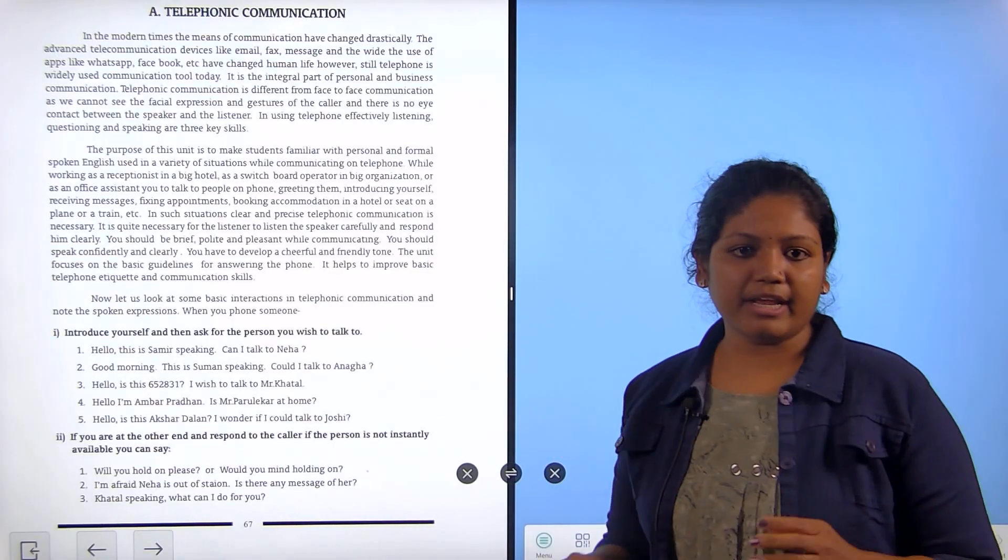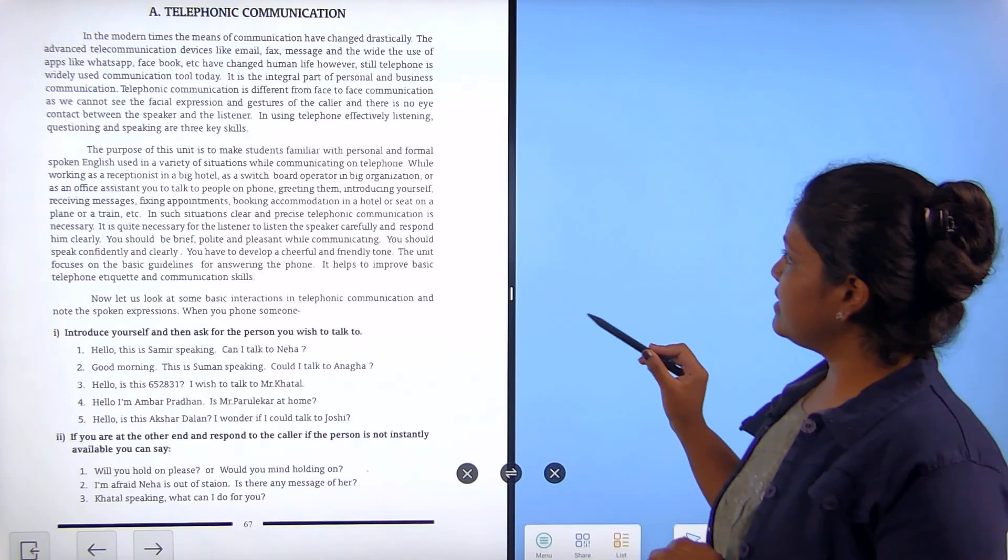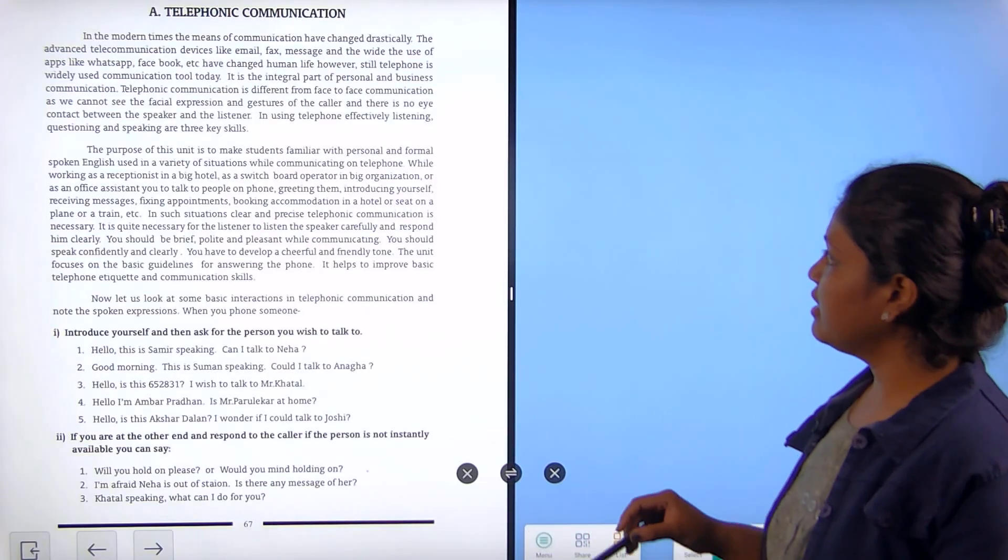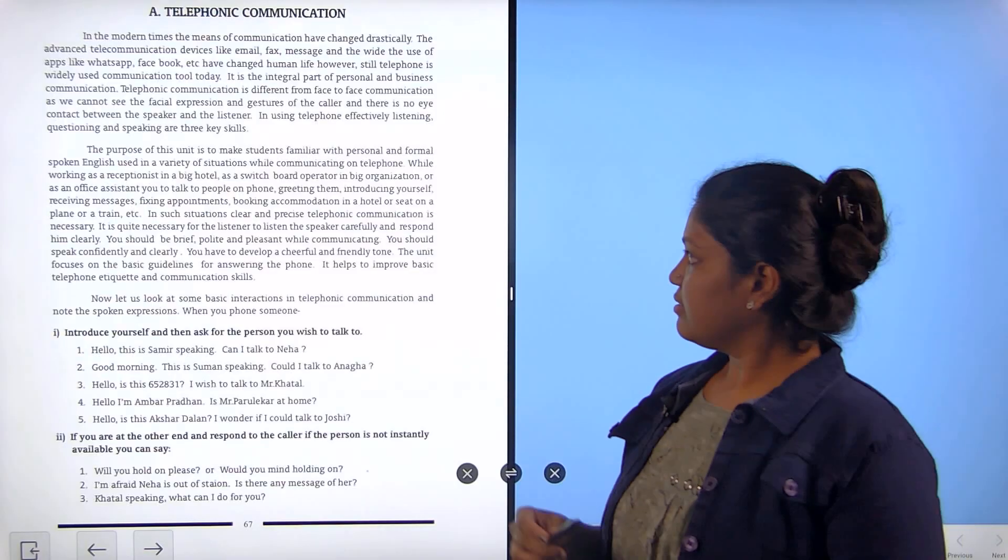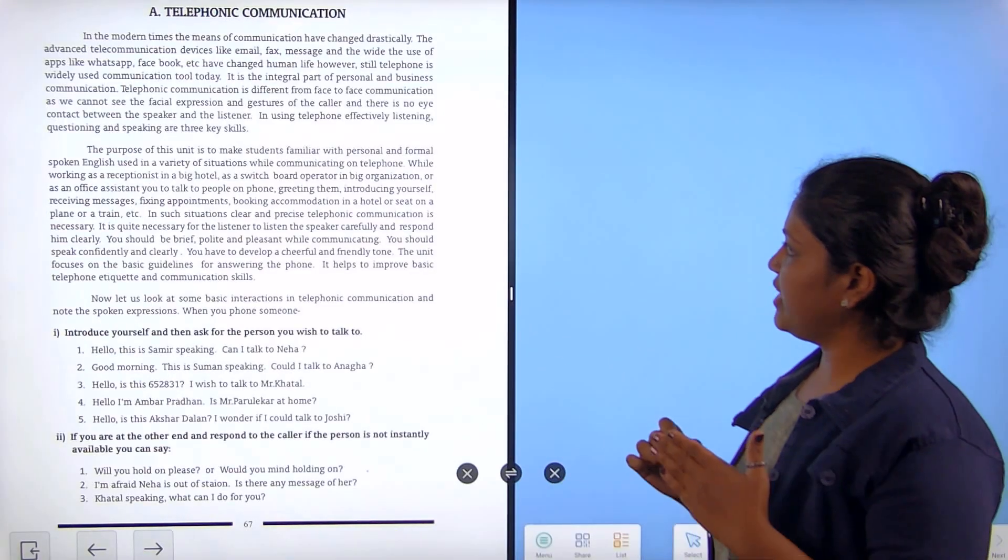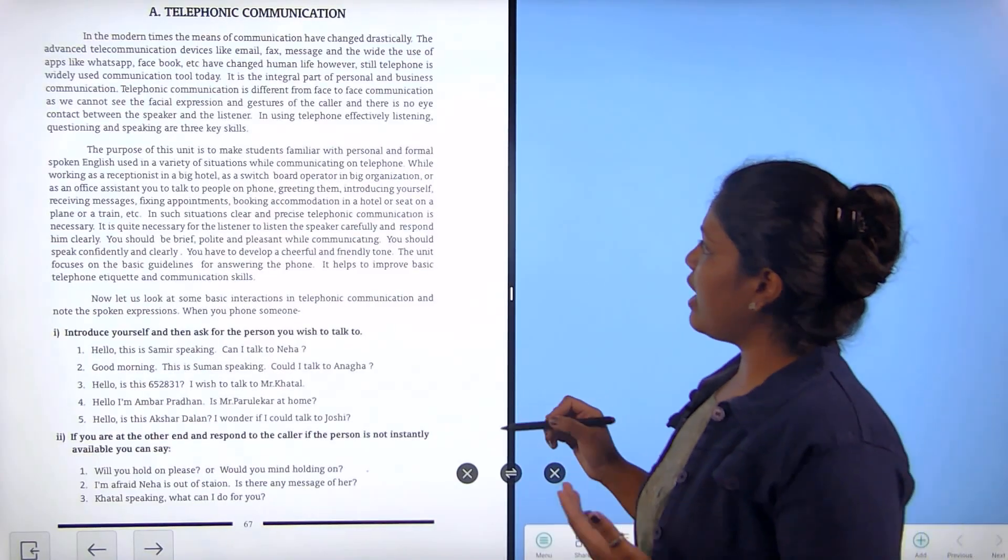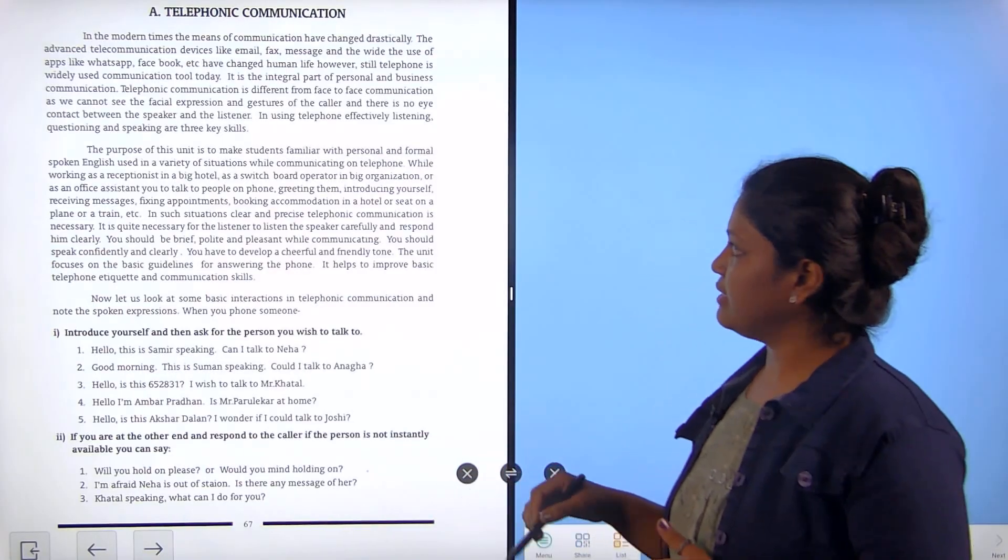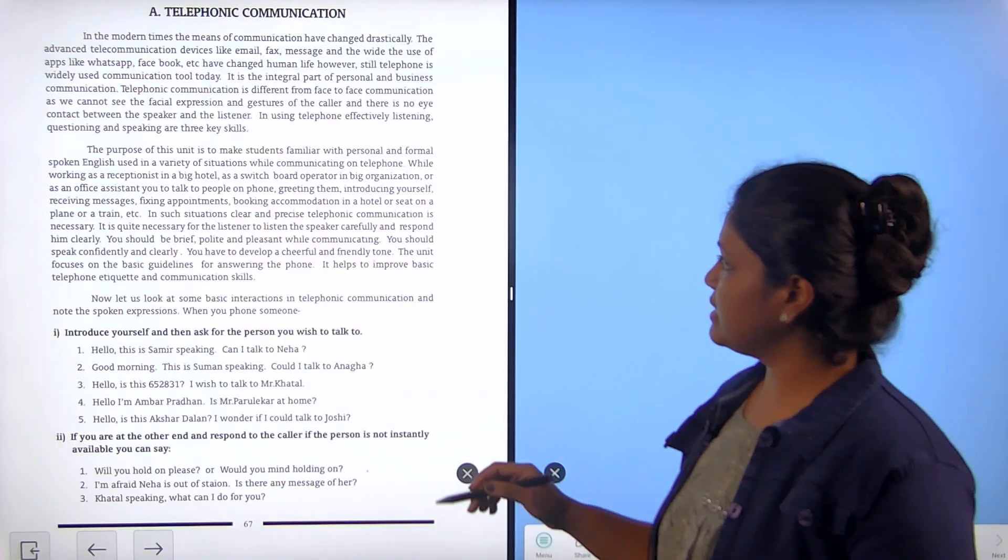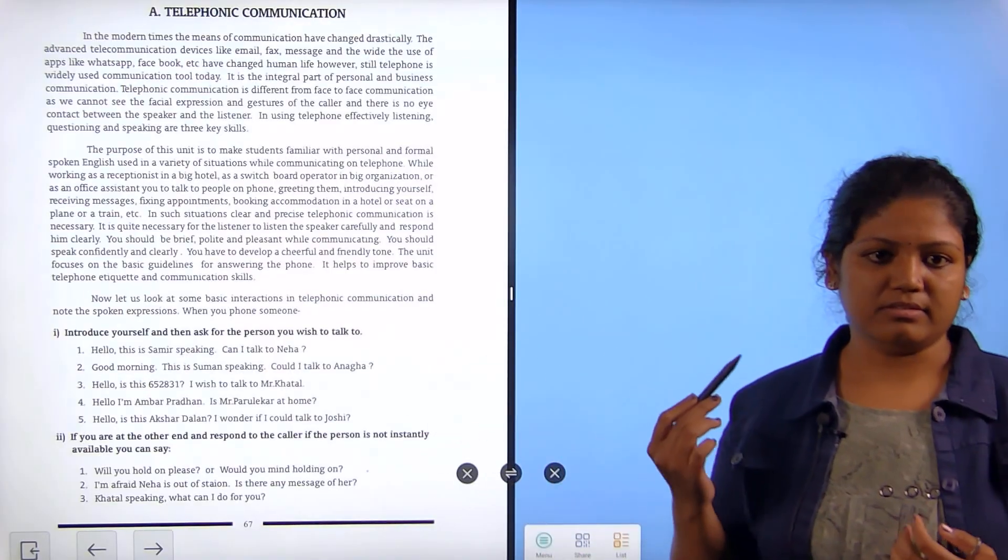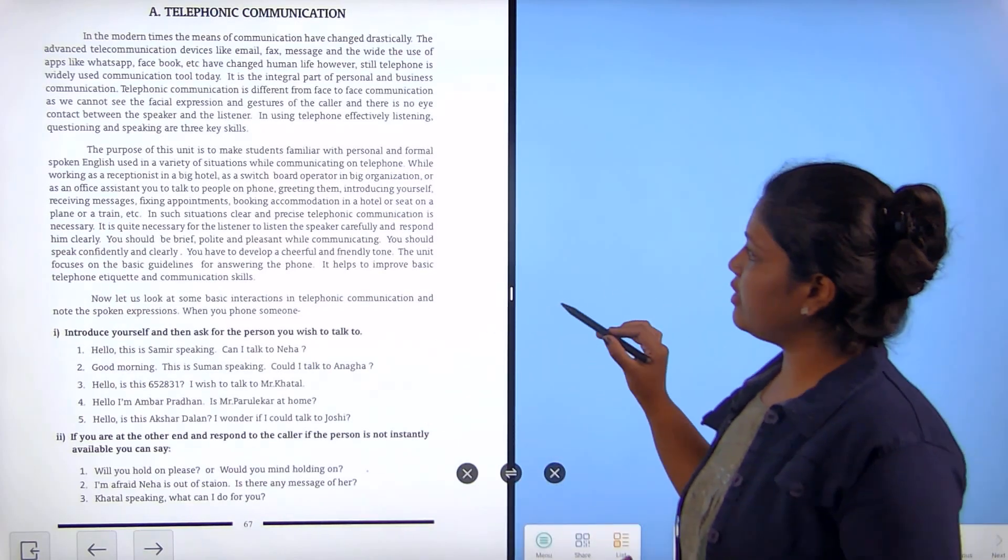It is the integral part of personal and business communication. Telephonic communication is different from face to face communication. Facial expression and gesture of a caller and there is no eye contact between the speaker and the listener. Using telephone effectively, listening, questioning and speaking are the three key skills.